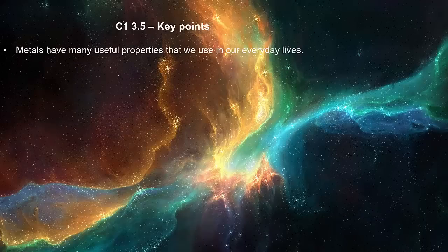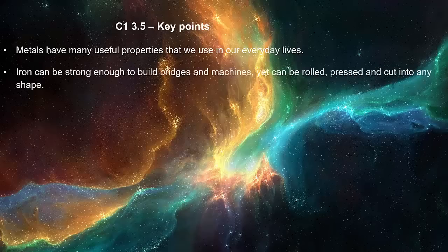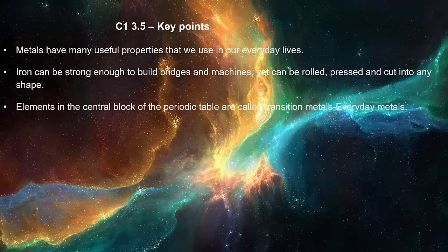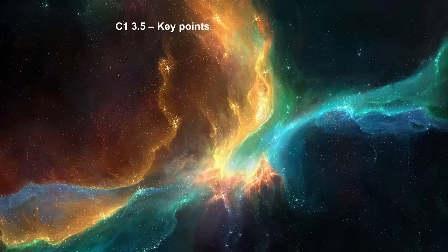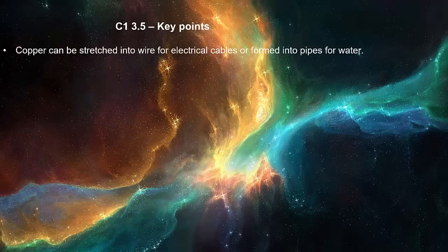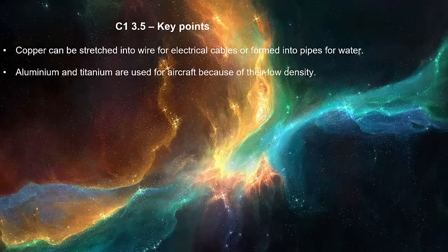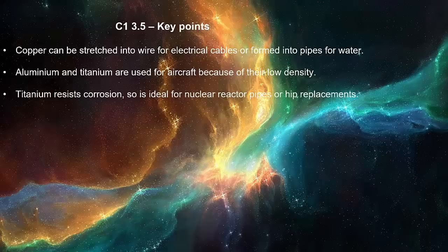Metals have many useful properties that we use in our everyday lives. Iron can be strong enough to build bridges and machines — it can be rolled, pressed and cut into any shape. Elements in the central block of the periodic table are called transition metals. Transition metals can be bent or hammered into shape and are good conductors of heat and electricity. Copper can be stretched into wire for electrical cables or formed into pipes for water. Aluminium and titanium are used for aircraft because of their low density. Titanium resists corrosion so is ideal for nuclear reactor pipes or hip replacements.